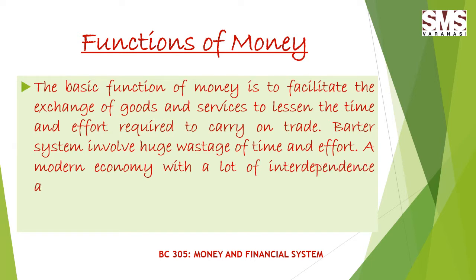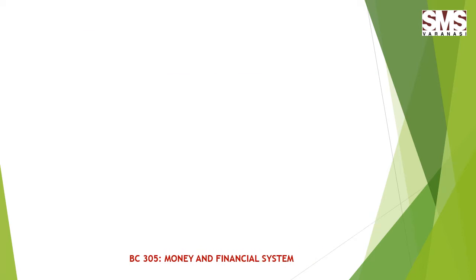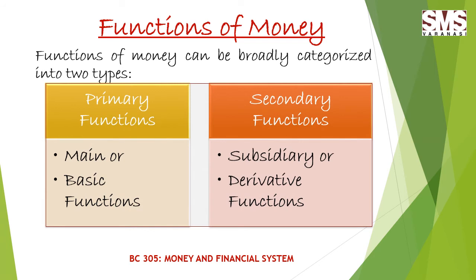With respect to a modern economy, money involves a number of functions that can smoothly function within a society, and without money none of the business activity can be performed. The functions of money can be broadly classified into two types: primary function and secondary function. Primary function can also be termed as main or basic function, whereas secondary function is also termed as subsidiary or derivative function, as it is derived from the primary function.